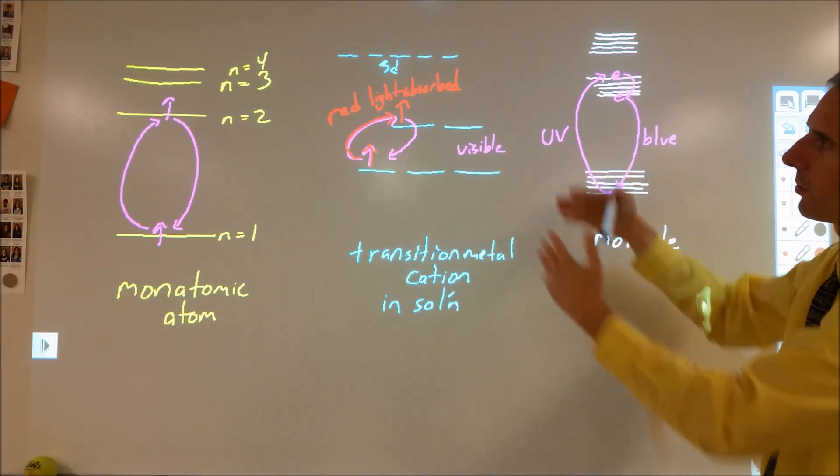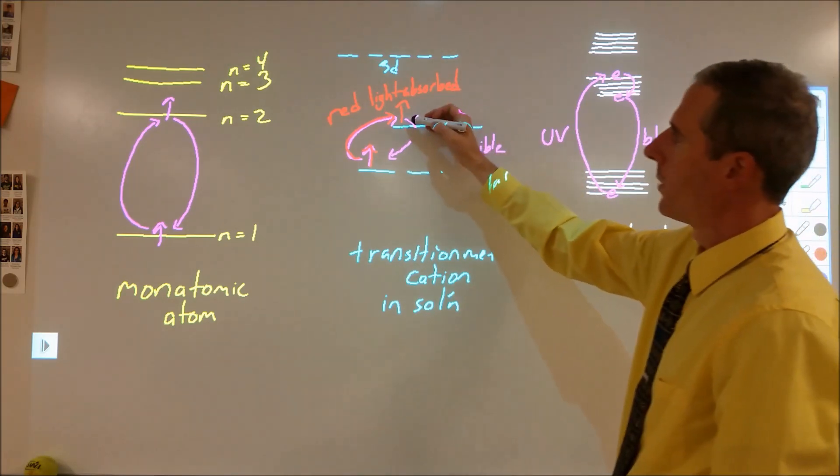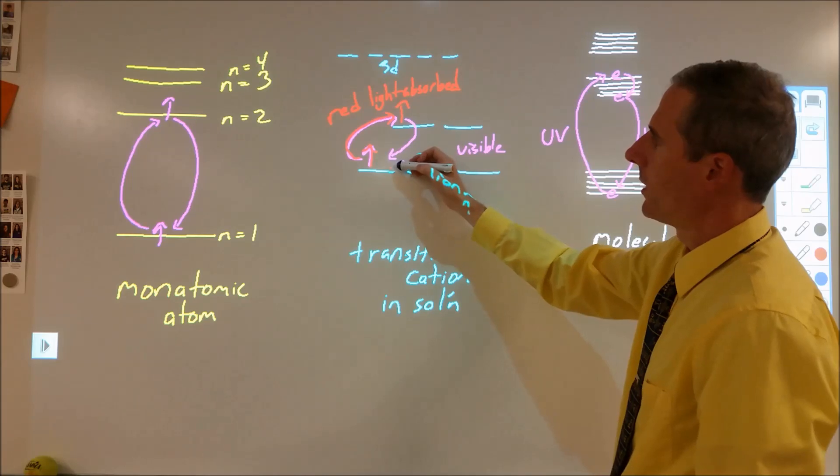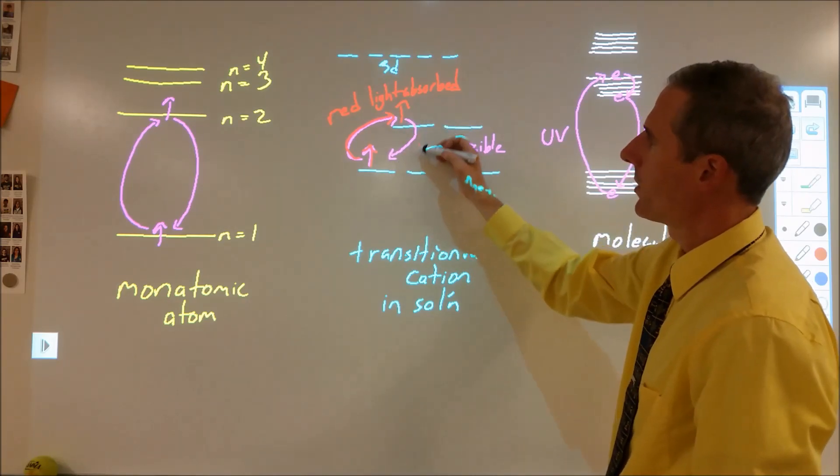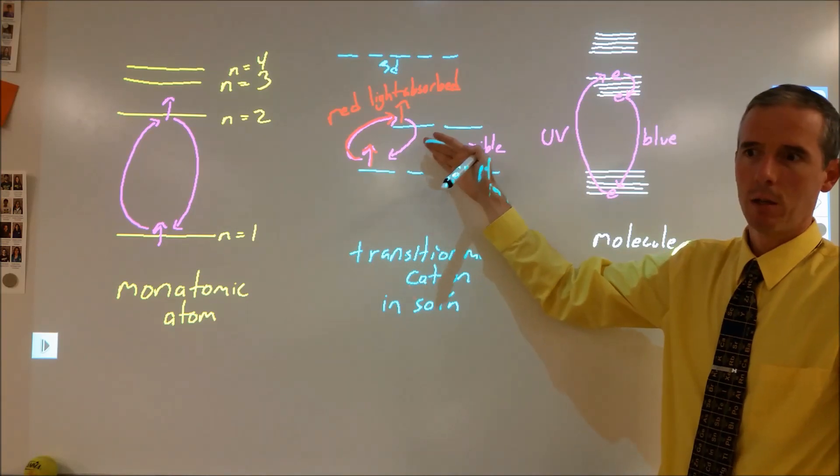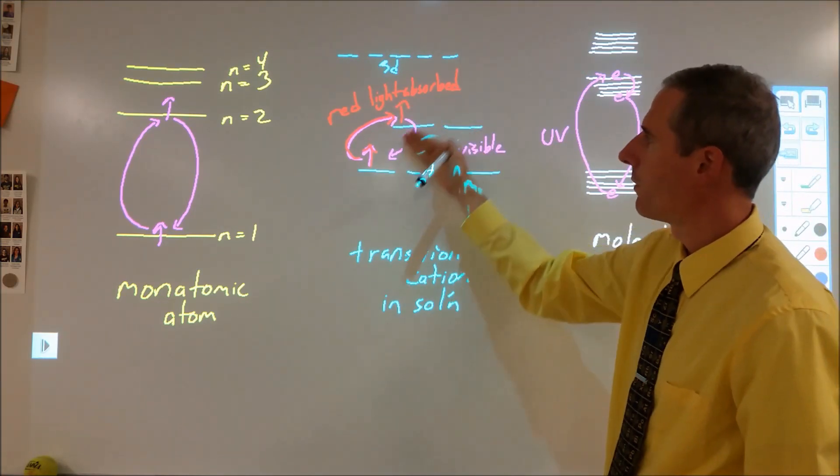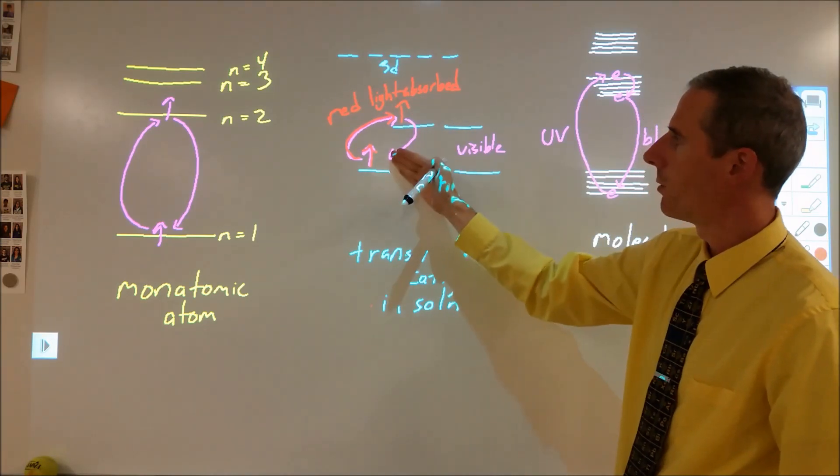What I don't know is how those factor into this. I don't understand when the red light gets absorbed, why doesn't that red light get re-emitted? What's the process by which that electron returns to this lower energy state without emitting the red light?